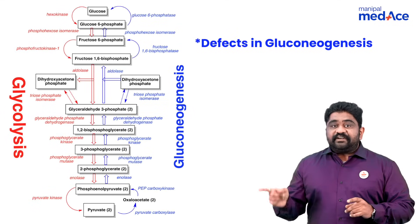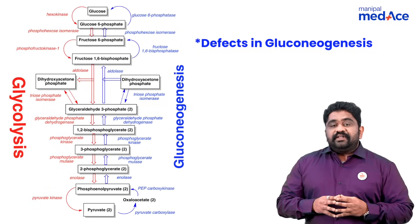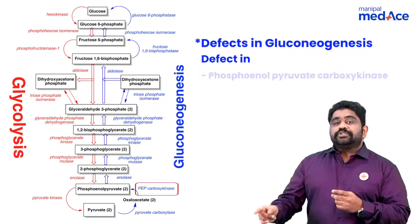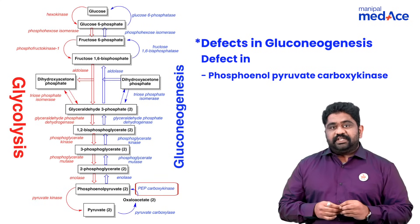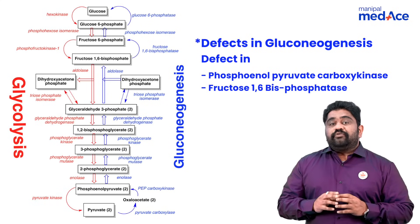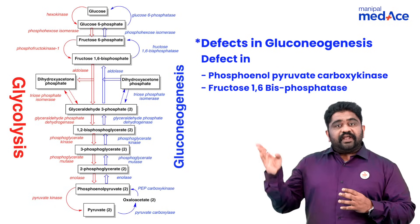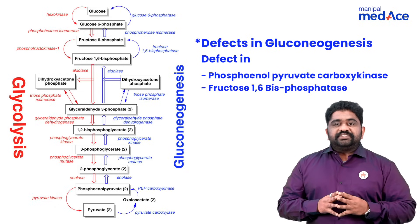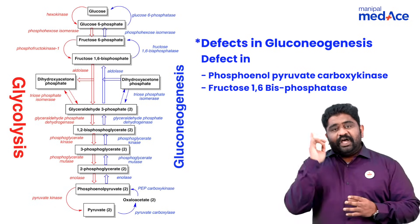Apart from that, if there is a defect in gluconeogenesis — for example, when there is a defect in phosphoenolpyruvate carboxykinase enzyme, the first enzyme, or when you think of fructose 1,6-bisphosphatase enzyme — if there is a defect in any of these enzymes, gluconeogenesis can be defective. There also you can have lactic acidosis.